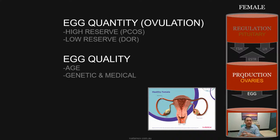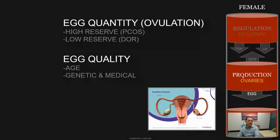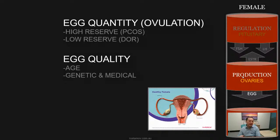For example, if a patient has high ovarian reserve or polycystic ovarian syndrome, there is an oversupply of follicles which can result in failed ovulation. At the opposite end of the spectrum, low ovarian reserve or diminished ovarian reserve can equally cause anovulation or failure to release an egg. In terms of quality, age, genetic, and medical factors are the main reasons why eggs cannot successfully fertilize or why an embryo fails to implant.